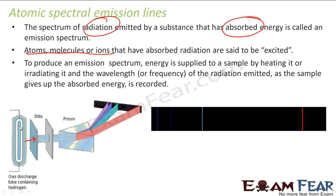You take any metal, you excite it, heat it, or use a gas discharge tube. You pass the radiation through the slit and prism, and they saw only a few spectral lines. And people were amazed — how come this is possible? How come we have only 4 or 5 lines? How come this is not continuous? These questions were something which were unanswered by Rutherford.